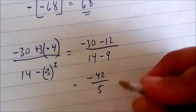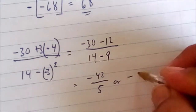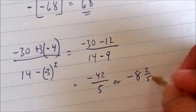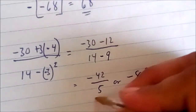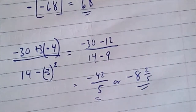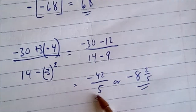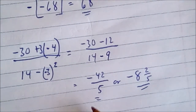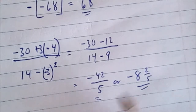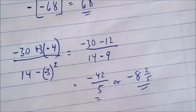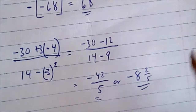Our solution cannot be simplified further. If you express this as a mixed number, it becomes negative 8 and 2 fifths. Either answer is correct — unless told to state it as an improper fraction, in which case negative 42 over 5 is the answer.